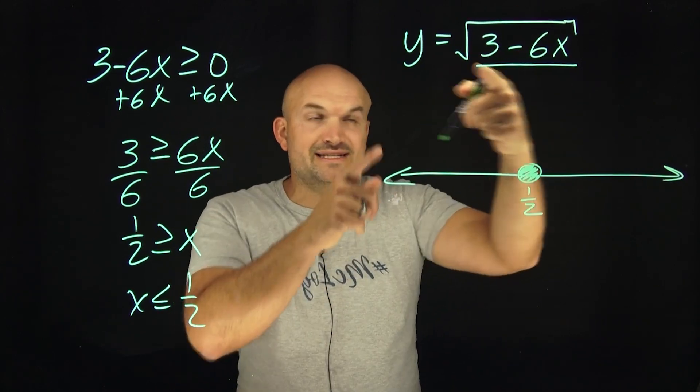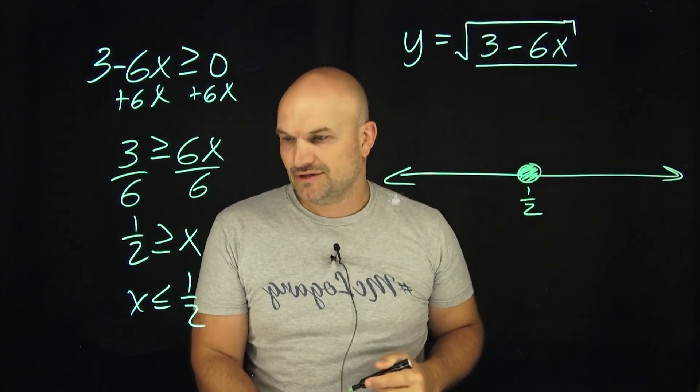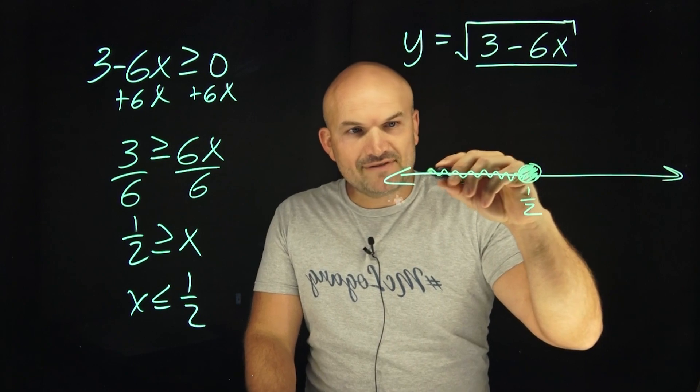Because if you were to plug in one half, you would get zero in your radicand. You can take the square root of zero. And then we're going to take all values to the left of one half.